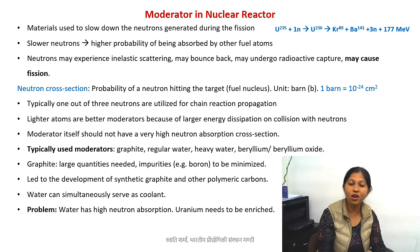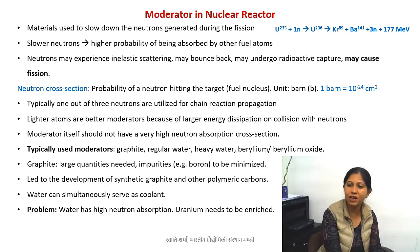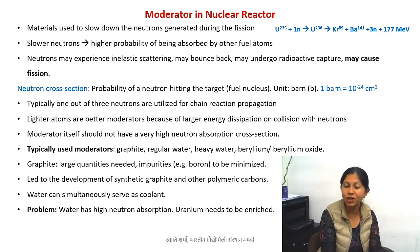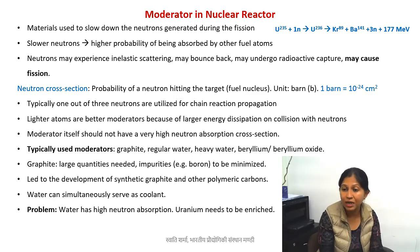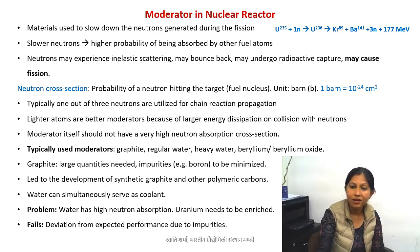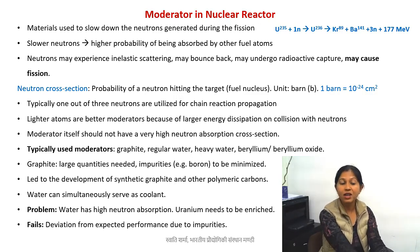Because water absorbs neutrons, you need a lot of uranium-235 in your fuel. In naturally found uranium, only a very small fraction is uranium-235. Increasing the fraction of uranium-235 in the fuel is the process known as uranium enrichment. So if you are using water as your moderator, you must use enriched uranium as your fuel.